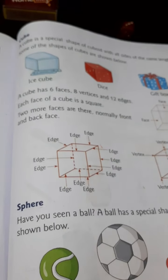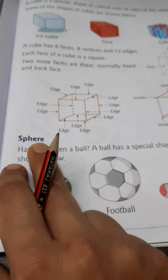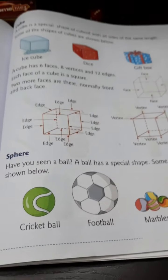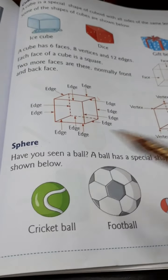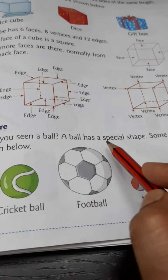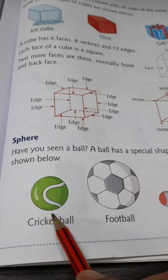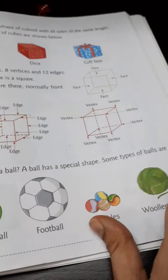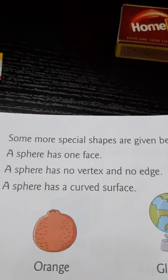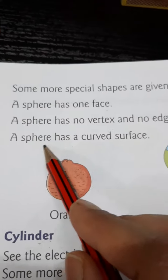Now, children, we generally get confused and say a ball is circle in shape — that is wrong. A ball has a special shape called sphere. Some types of balls are: cricket ball, football, marble balls, and woolen balls — all of these are sphere in shape. A sphere has one face, no vertex, and no edge, and it has a curved surface.